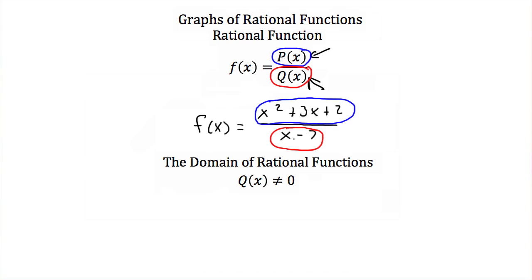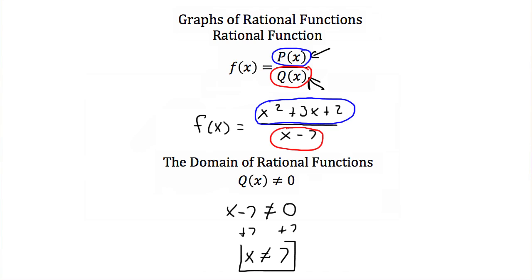If our denominator is equal to zero, then we're dividing by zero and that would make this function undefined. So the domain of a rational function is always restricted where q(x) cannot equal zero. In this example, x - 7 cannot equal zero, which means x cannot equal 7. So the domain is all real numbers except x = 7.